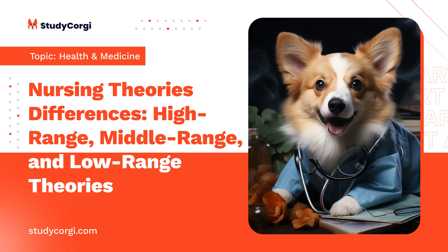Middle range theories also provide a theoretical model of health behavior and help patients be independent to manage their health problems. The major concepts of such theories are disease characteristics, life quality, cognitive assessment, health information, and outcome expectations. Low range nursing theories are used for interventions for post-surgical pain, acute pain management, and assisting in the acceptance of death.